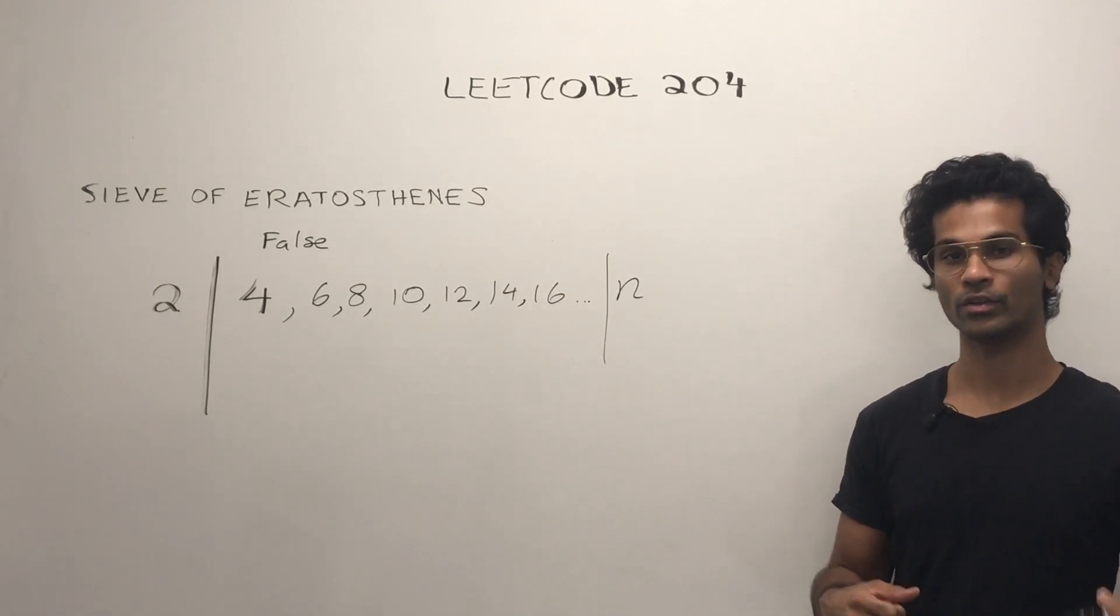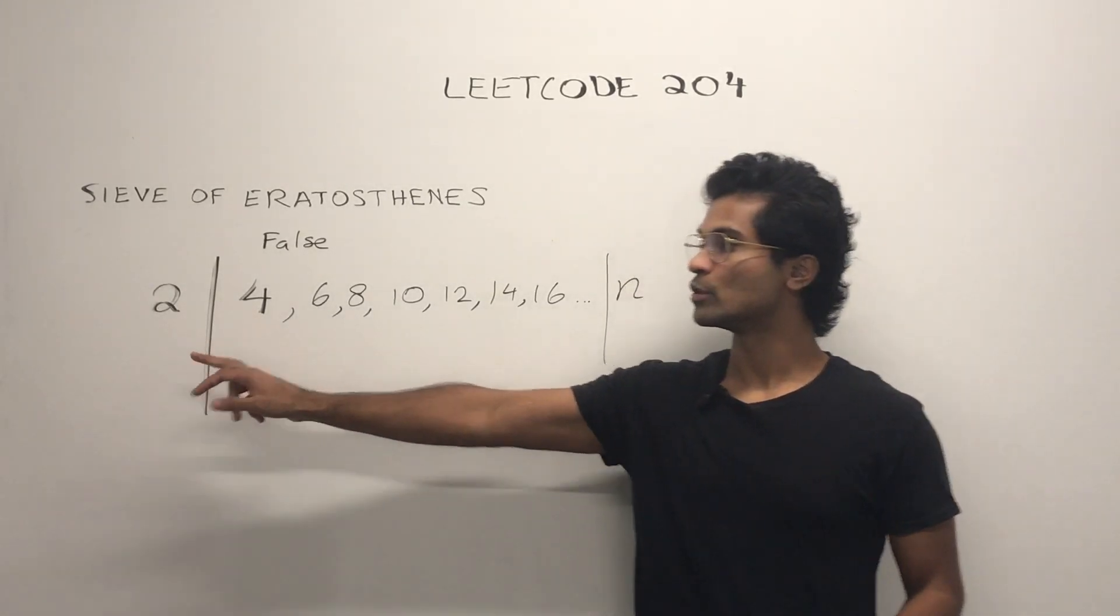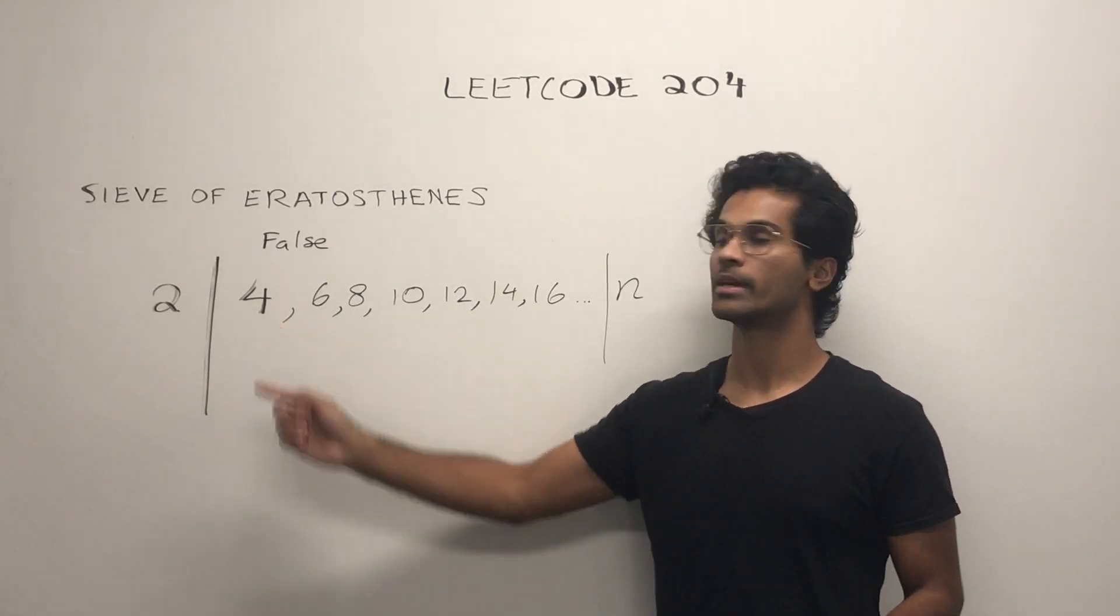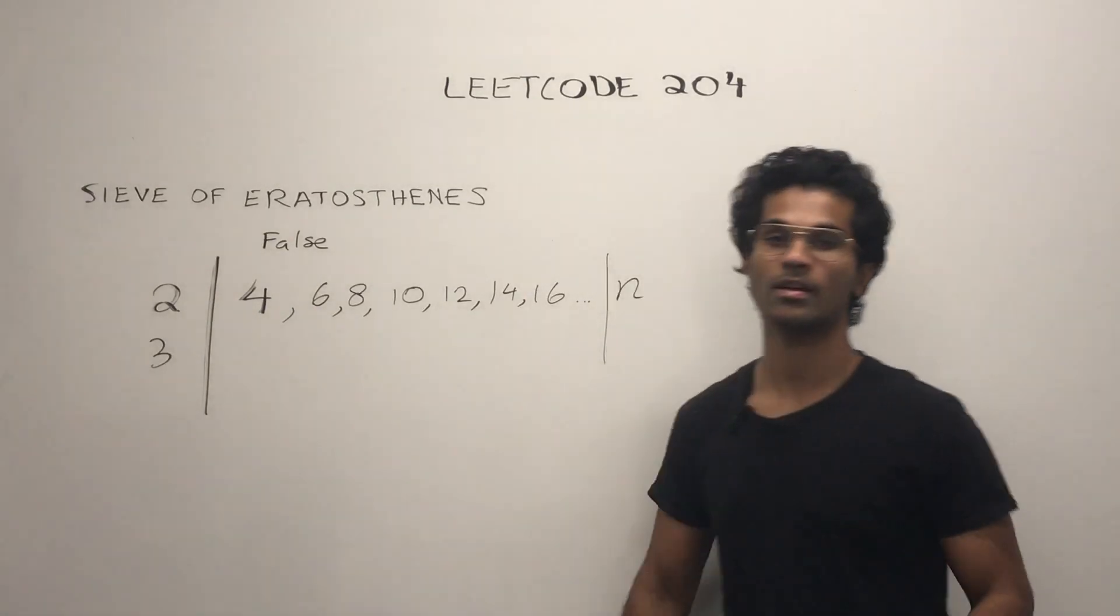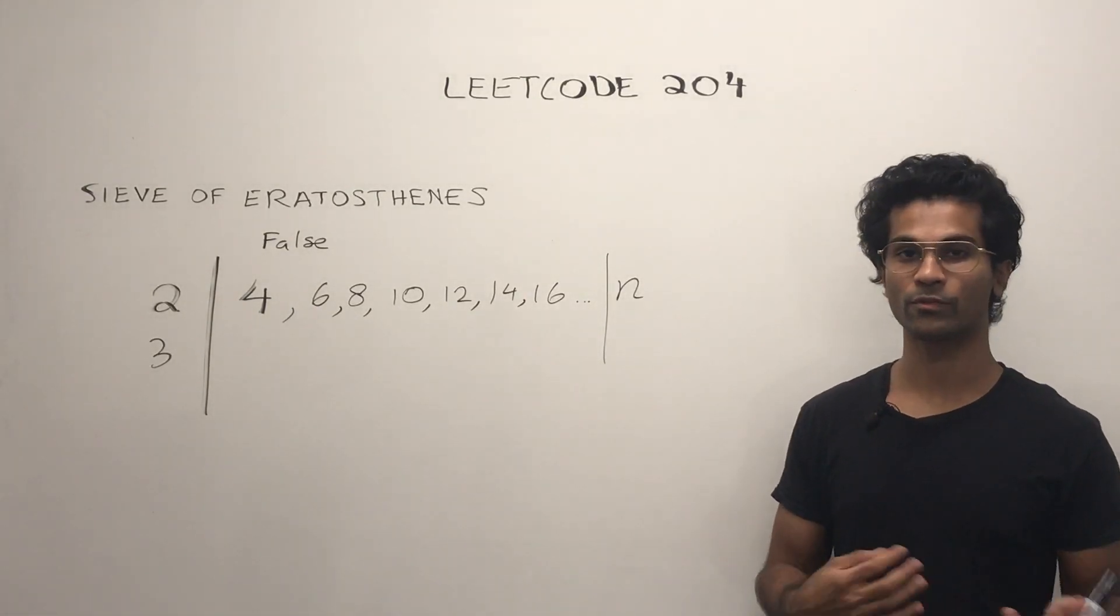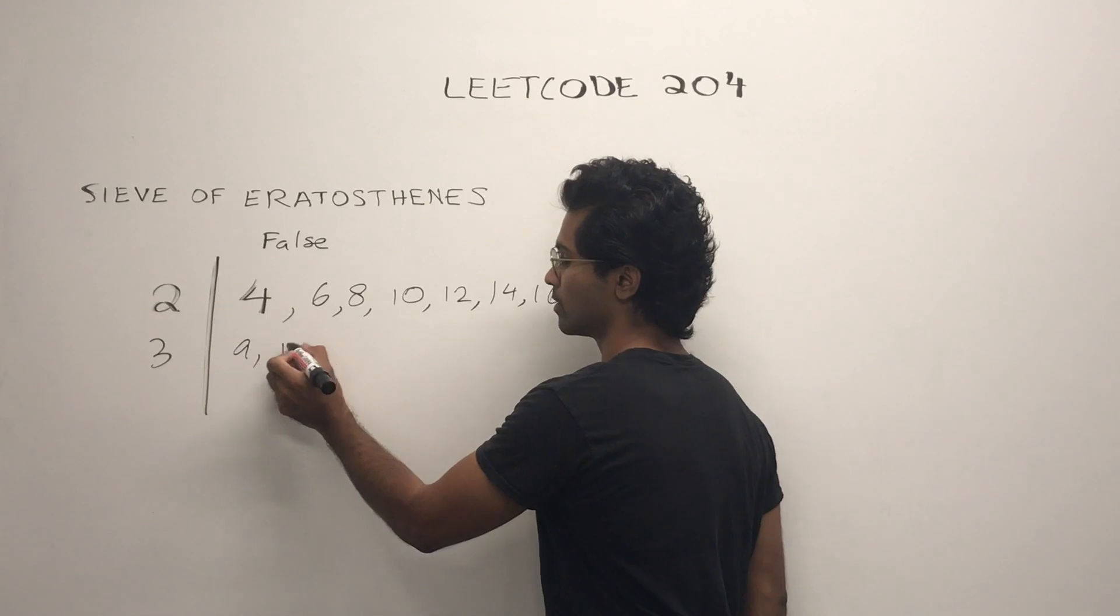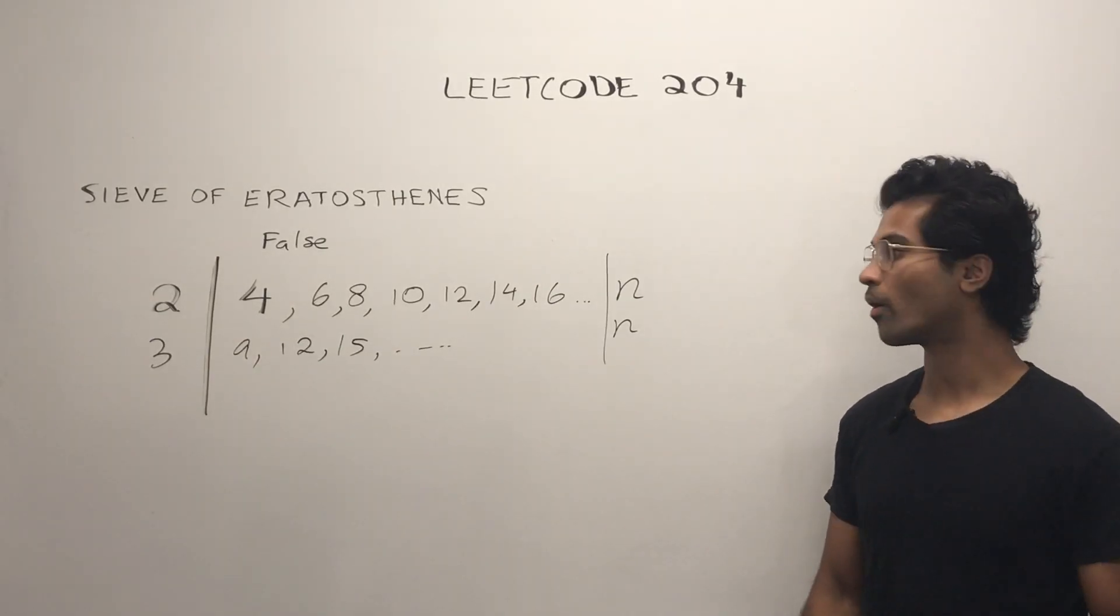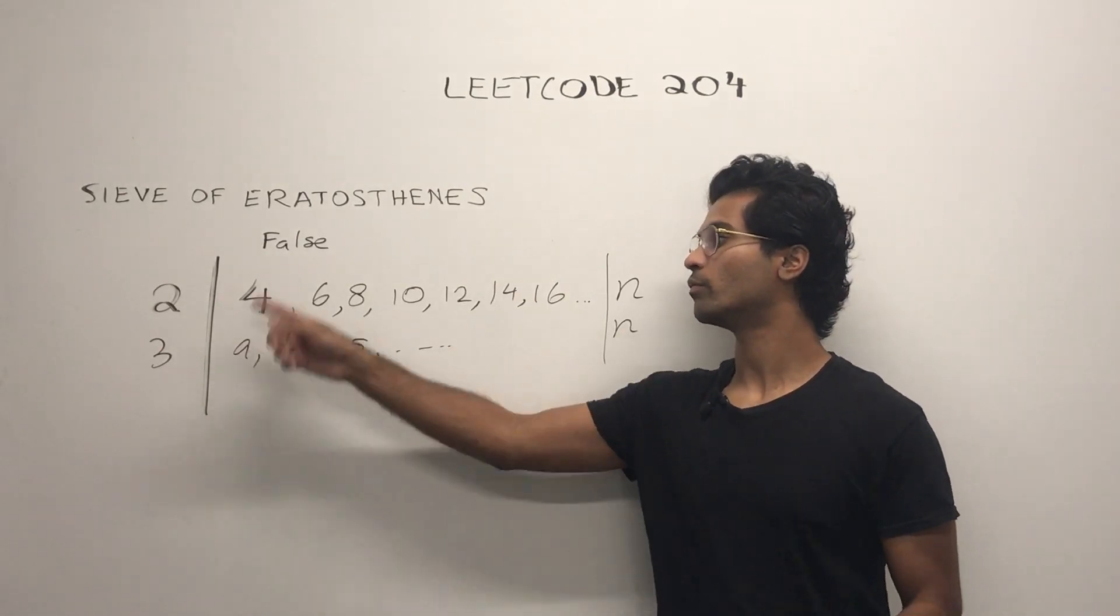Next, we pick another number. After 2, we have 3. Is 3 part of any of these that we've already eliminated? It's not. And then we begin again.